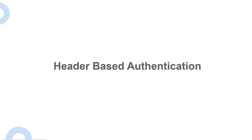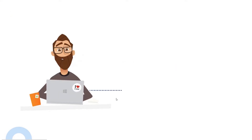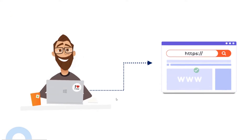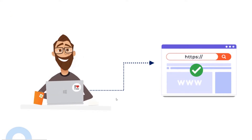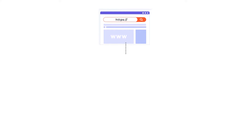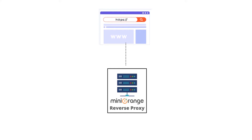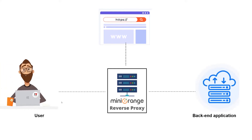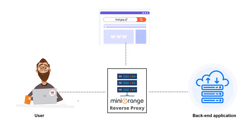Header-based authentication is a method by which users will be authenticated by the URL's HTTP header parameters. These parameters are set by the reverse proxy server, which is placed in between the user and the backend application.